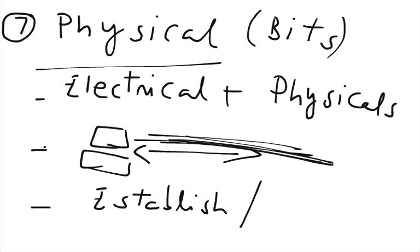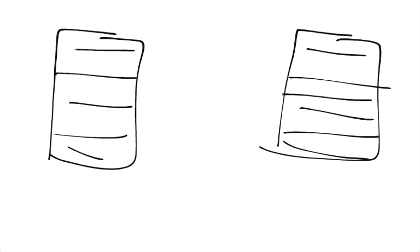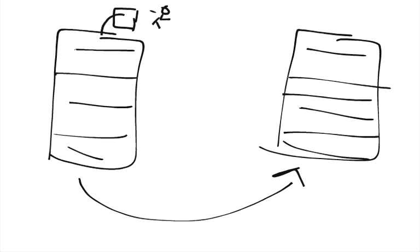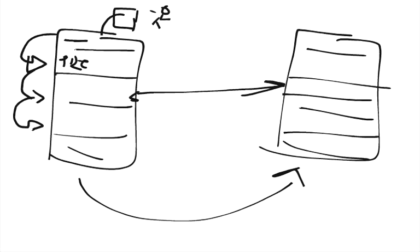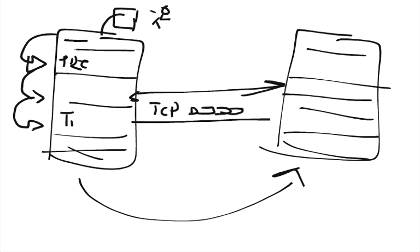We have seven layers in our OSI model and those layers work at the source and at the remote computers. If we are using an application, that application gives the data to the application layer. The application layer gives that data to the presentation layer, which converts the data into a machine-readable format and gives it to the session layer. The session layer establishes the connection and gives the data to the transport layer, which is responsible for sending the data securely to the host computer and assigns the TCP address to those packets.